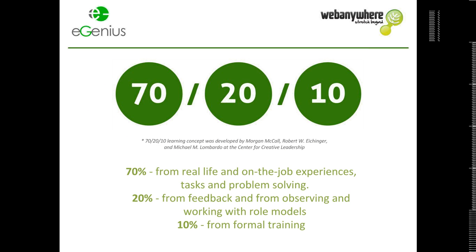If we talk about 70-20-10, this comes from good research — asking people how they felt they learned and developed, and observing people in the workplace. These proportions show that only 10% of learning results from formal training. 20% comes from feedback and working with a significant person — your line manager or someone else. And then the huge chunk — 70% — comes from real-life, on-the-job experiences: people doing the job, doing tasks, and problem-solving as they're doing it.